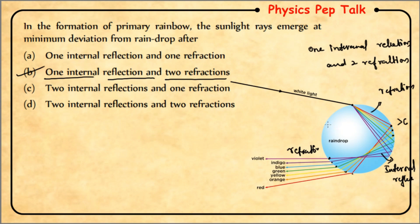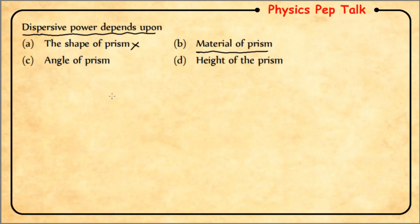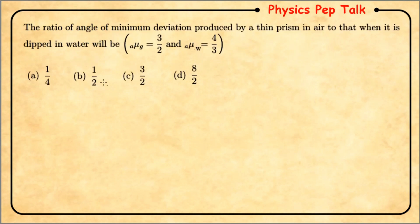Next question: dispersive power depends upon? Dispersive power does not depend on the shape of the prism, angle of the prism, or height of the prism. It depends on the material of the prism. Option B is the correct answer.